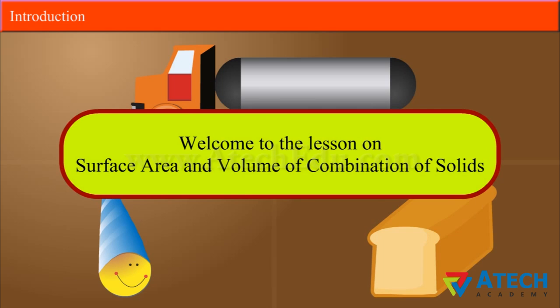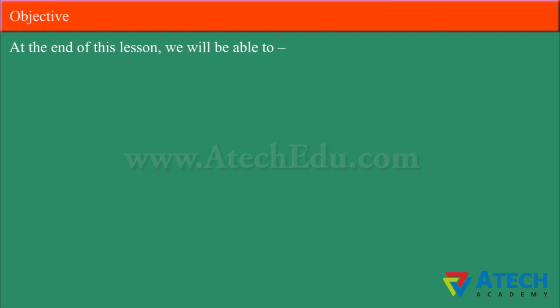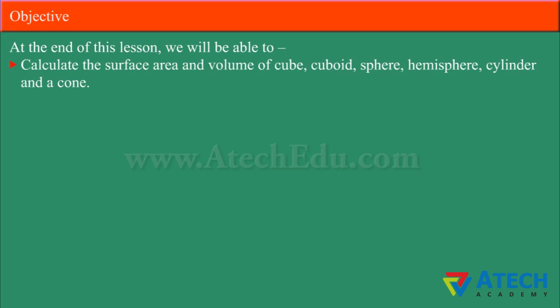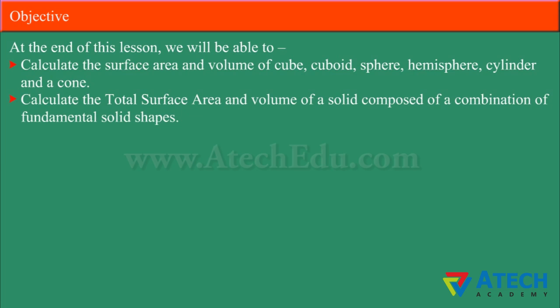Welcome to the lesson on surface area and volume of combination of solids. At the end of this lesson, we will be able to calculate the surface area and volume of cube, cuboid, sphere, hemisphere, cylinder and a cone, and calculate the total surface area and volume of a solid composed of a combination of fundamental solid shapes.